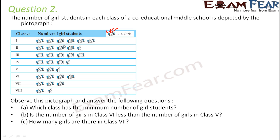We do not need to calculate how many students are there in each class. Just by looking at this picture, we can say which has the minimum number of girls students — that class where you have the minimum number of pictures. So we have minimum number of pictures in class 8. You just have one full picture and one half picture. So class 8 has minimum number of girls students.